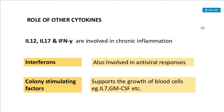Other cytokines such as interleukin-12, interleukin-17, and interferon-gamma are involved in chronic inflammation. Interferons are involved in antiviral responses — relevant today given COVID-19. Colony stimulating factors are another type of cytokine that support the growth of blood cells.